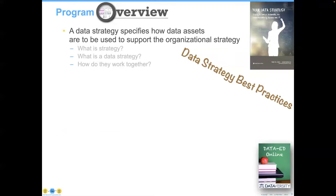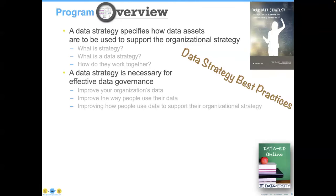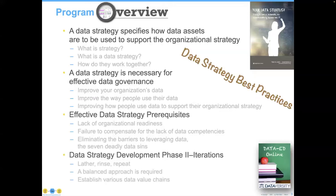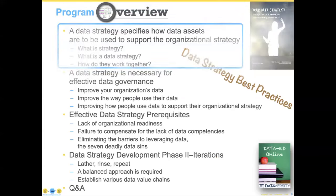A data strategy specifies how organizational data assets are to be used in support of the organizational strategy. In other words, we've got this fuel — or soil, I like to call it — and we're going to use it in support of making our organizational garden better. Then we'll go into data strategy coordinated with data governance, and finally to the last part: how to do the actual strategy itself. There's a very nice way of approaching this without too much difficulty. So let's jump right in.